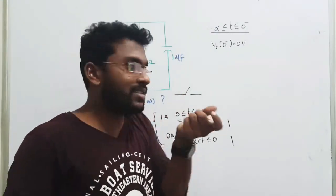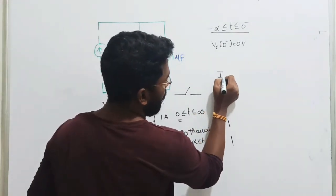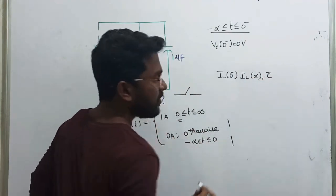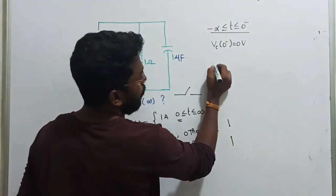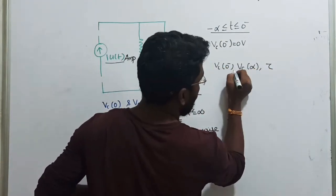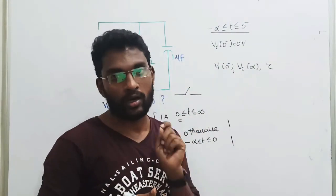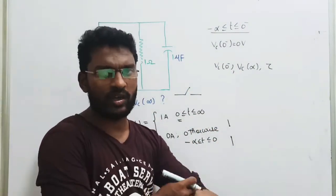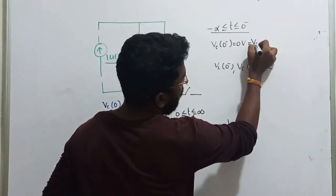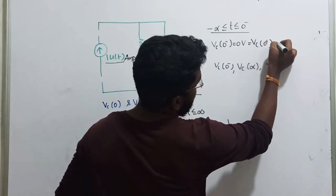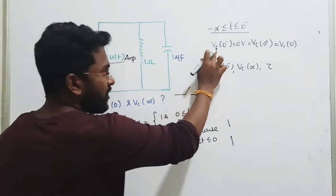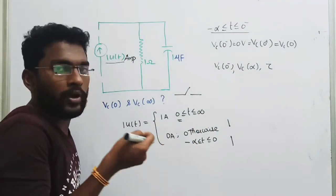For an RL circuit, you are supposed to calculate the value of I(0-), I(∞), and the time constant. Similarly, while talking about an RC circuit, we are all supposed to calculate Vc(0-), Vc(∞), and the time constant. That is the primary target parameter — that is the question we can do.